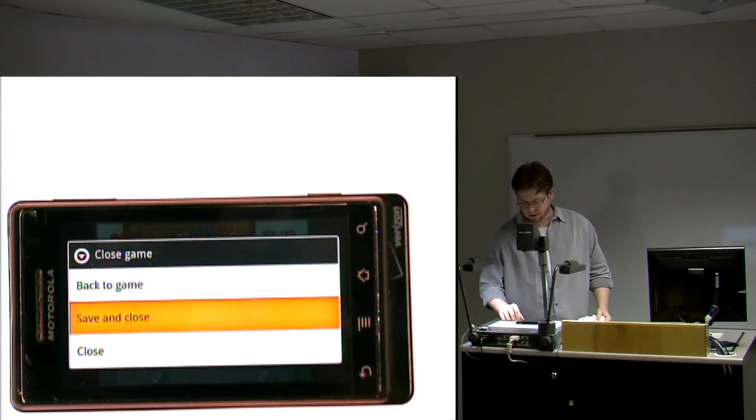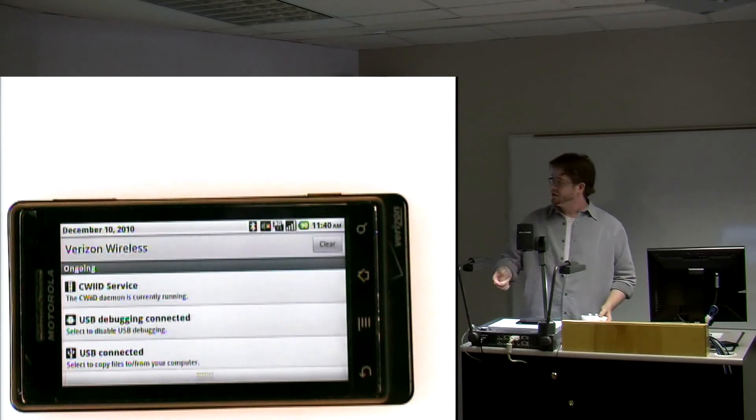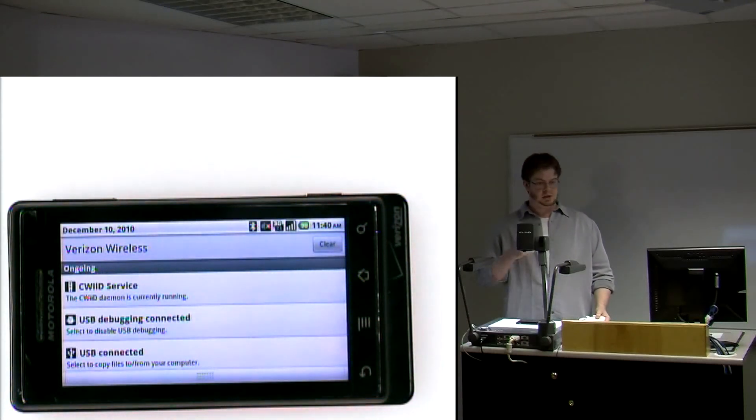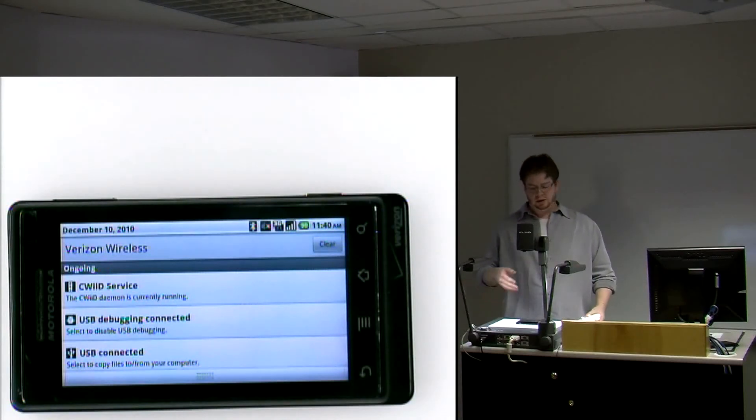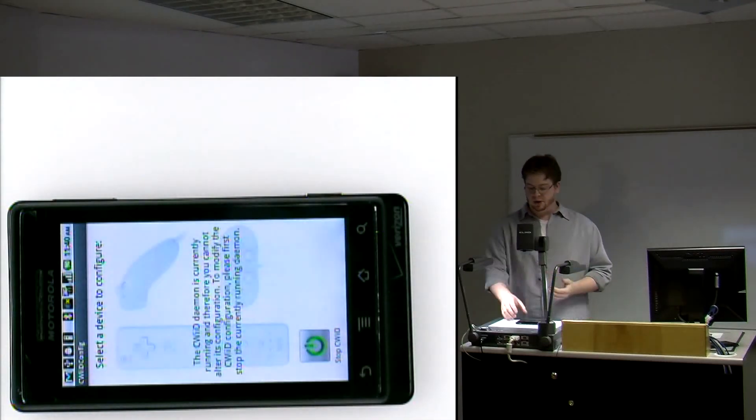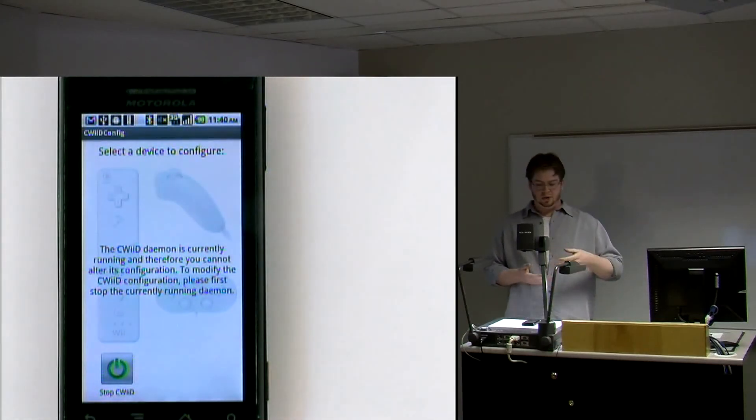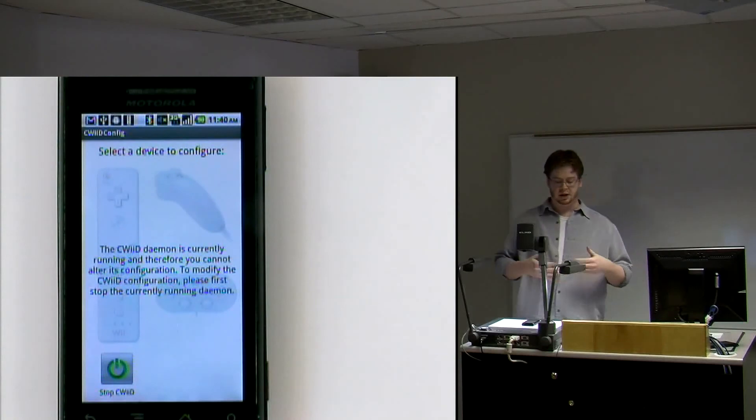And then when you're done, you'll notice that as long as this is connected there will be this service right here. This service actually persistently runs specifically because if you were to shut off Bluetooth, then the daemon has to shut off as well. So it basically listens to allow the user first off a notification that it's still running and also a way to simply get back to this configuration utility, but also to listen for Bluetooth events. And if Bluetooth decides to start shutting off, it'll send an I'm about to shut off event, and then CWD will shut itself off as well.